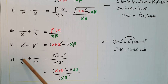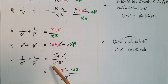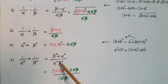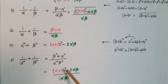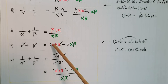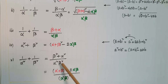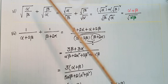Next, 1/α² plus 1/β²: take LCM which is alpha²·beta². In the numerator, beta² plus alpha², which equals alpha² plus beta² equals (alpha+beta)² minus 2·alpha·beta. The denominator alpha²·beta² can be written as (alpha·beta)². So the result is [(alpha+beta)² minus 2·alpha·beta] divided by (alpha·beta)².